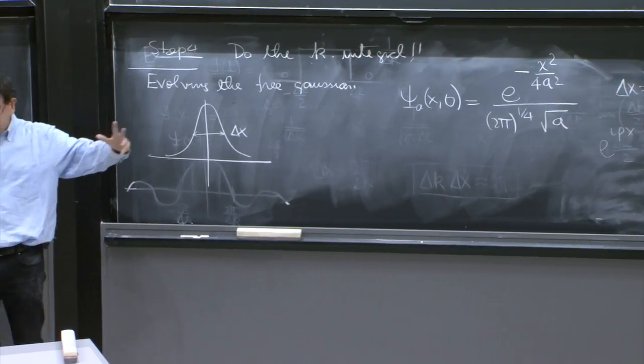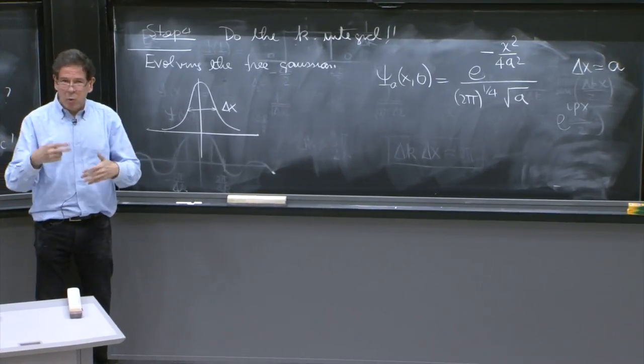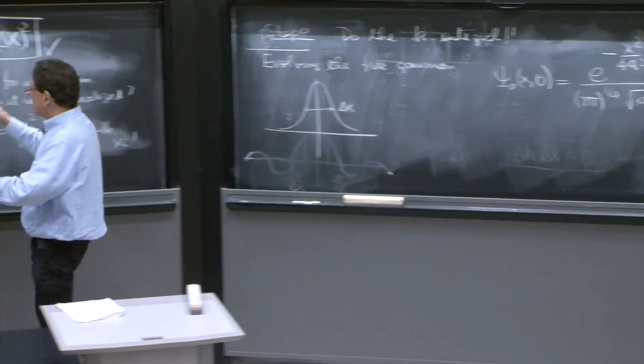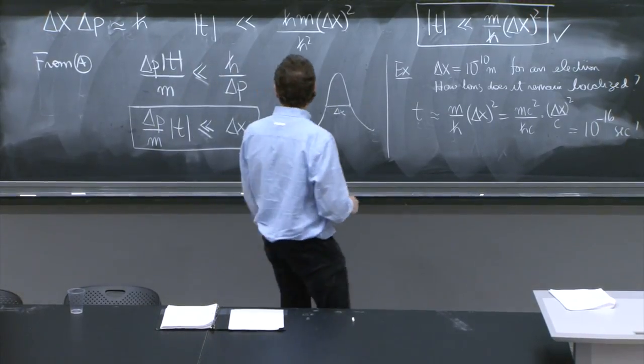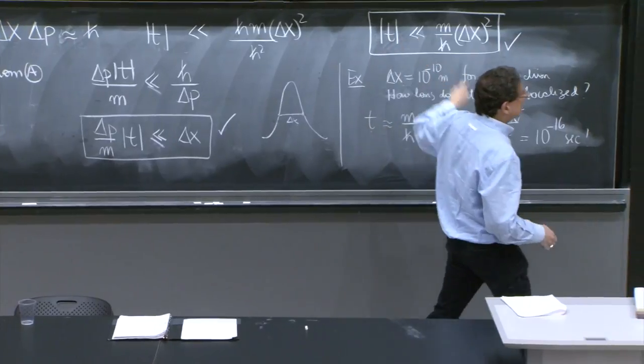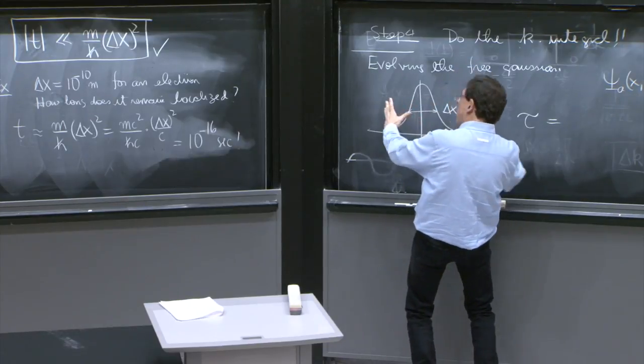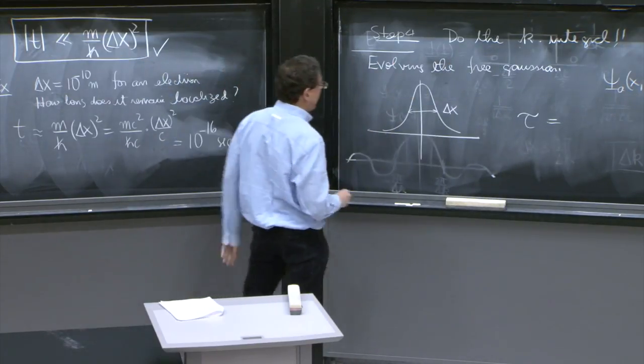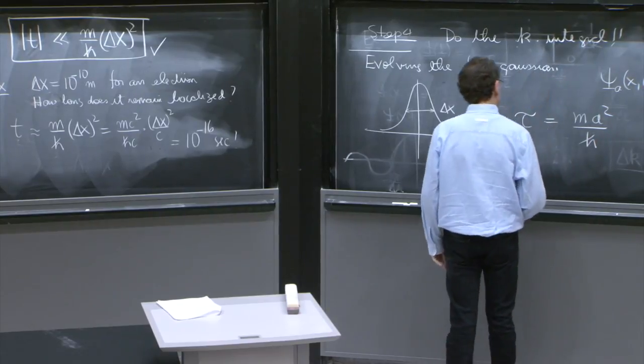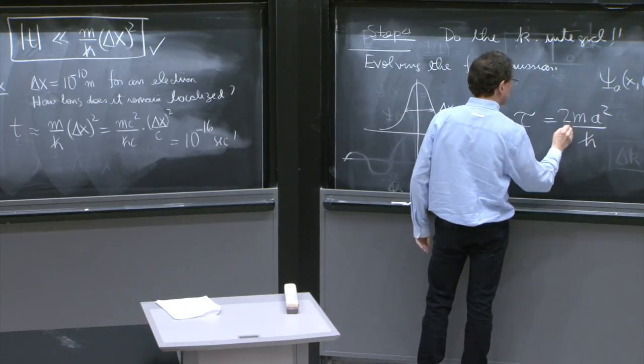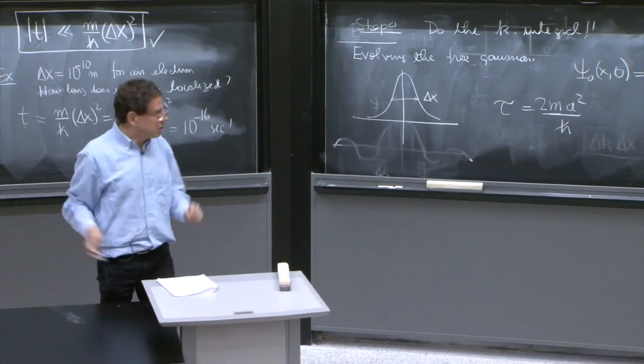And what is it going to do in time? Well, it's presumably going to spread out. So the width is going to change in time. There's going to be a time in which the shape changes. Will it be similar to what you have here? Yes. The time will be related. So there will be some relevant time in this problem for which the width starts to change, and it will be related to ma² over ℏ. In fact, you will find that with a 2, the formulas look very, very neat, and that's the relevant time for deformation of the Gaussian.